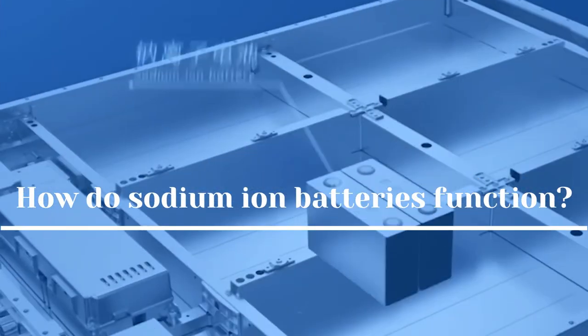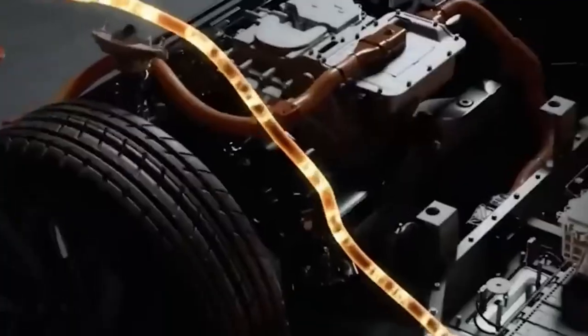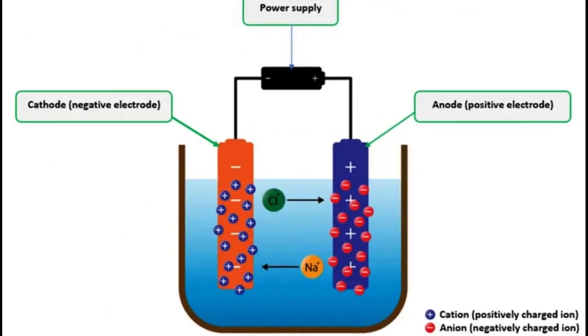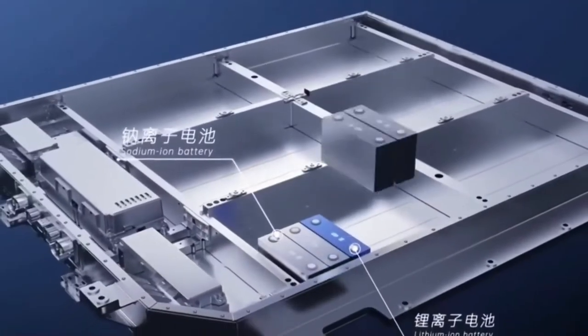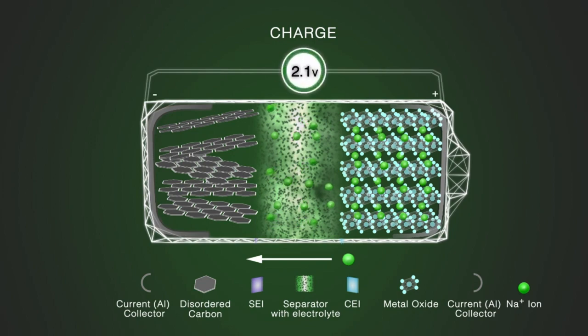How do sodium ion batteries function? During discharging and charging, the sodium ion is shuttled from the positive cathode to the negative anode. Sodium ions from the cathode are extracted and inserted into the anode during the charging process. During the charging process, electrons are pushed from cathode to anode via the external circuit.